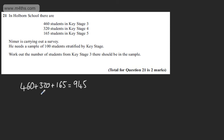So all I'm going to write then is that I want 100 of the 945 and I'm going to multiply that by the number of students in Key Stage 3 and that's going to be 460.